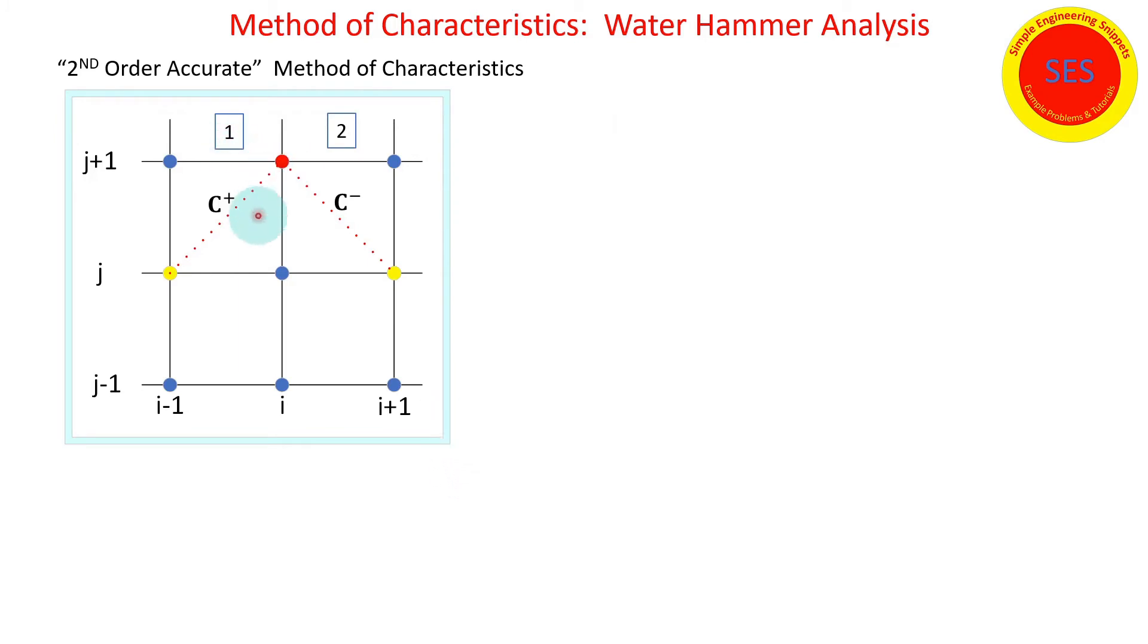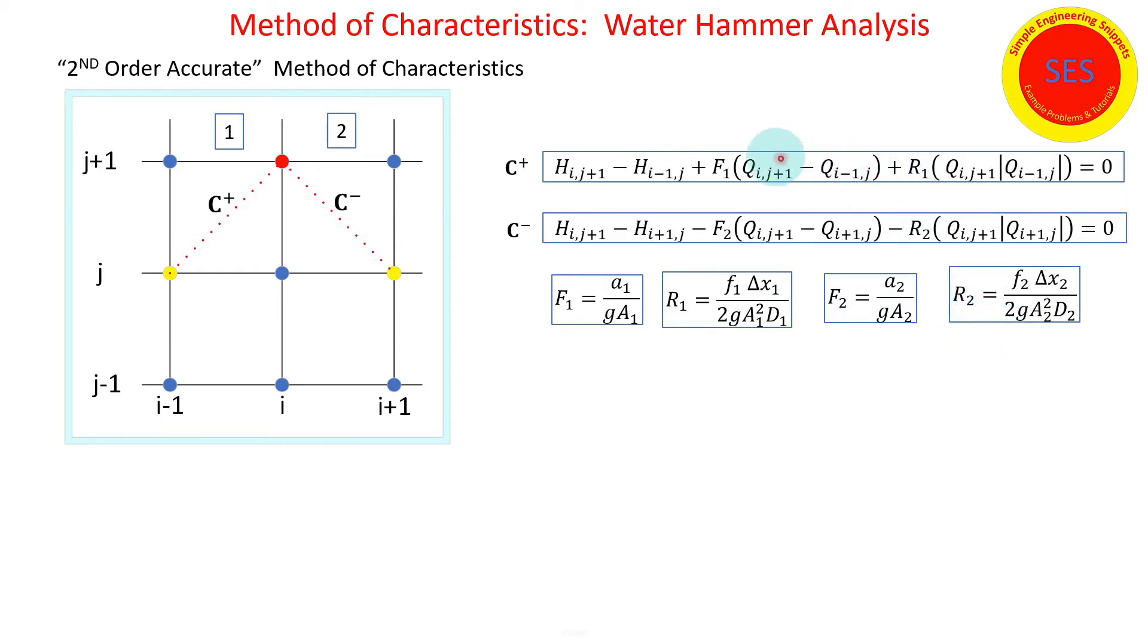So let's say we have in pipe i minus one to node i, call that pipe one, and we have an elastic factor denoted as F1. And in pipe two we also have a resistance one. In that pipe, in pipe two, we have an elastic factor denoted as F2 and a resistance R2. And so now we repeat our positive and minus characteristics equations with the resistances and elastic factors noted.